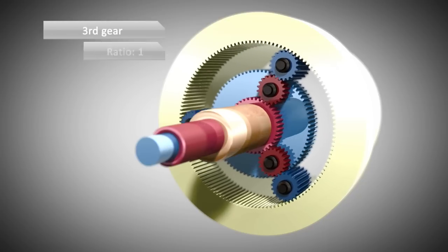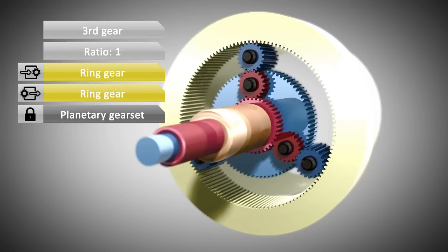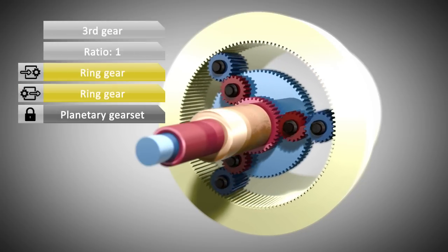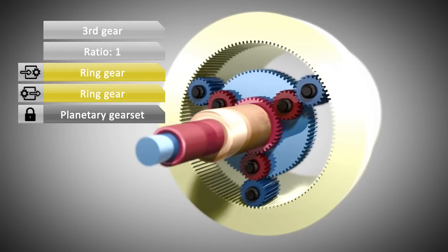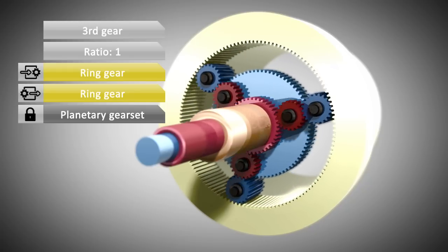In third gear, a gear ratio of one is accomplished by locking all relevant parts of the planetary gear set. Now the whole planetary gear set is rotating.